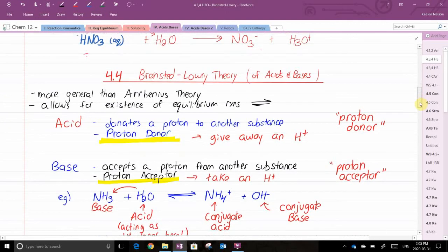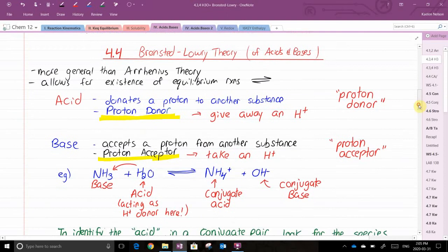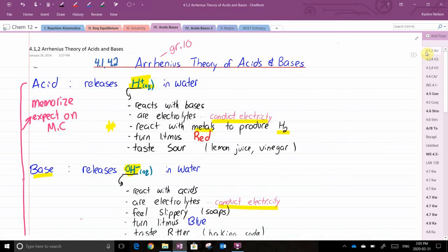The most important part of this lesson is section 4.4 on the Bronsted-Lowry theory of acids and bases. Up until now, in grades 10 and 11, you have been learning the Arrhenius theory. A quick summary of the Arrhenius theory is that if you're looking for an acid or you're trying to identify an acid, you're looking for H+.